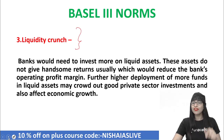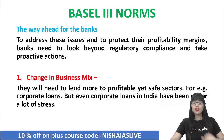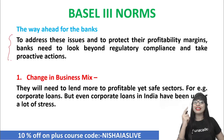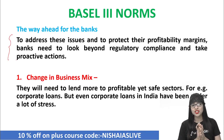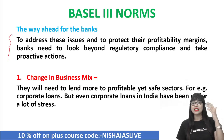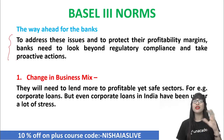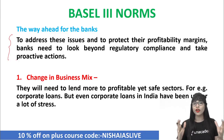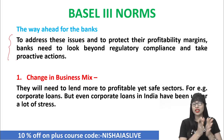There should be a way forward. The way ahead for the banks: to address all the issues or challenges and to protect the profitability margins of the bank, it is very important for banks to look beyond regulatory compliance and take protective actions. Point number one is change in business mix — they need to lend more to profitable yet safe sectors. For example, lending to corporate loans is kind of profitable and also safe. Whereas priority sectors like agriculture — they have to lend because that is important, but the chances of recovering the loan could be a little uncertain. But for the profitability of the bank, you have to make a point of lending more to profitable sectors.